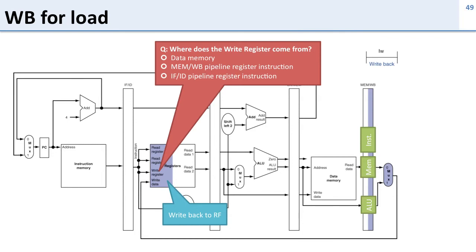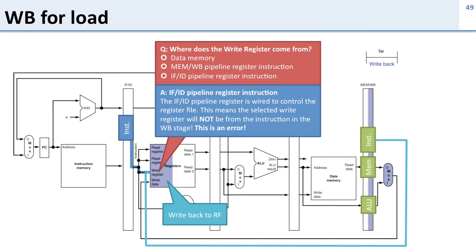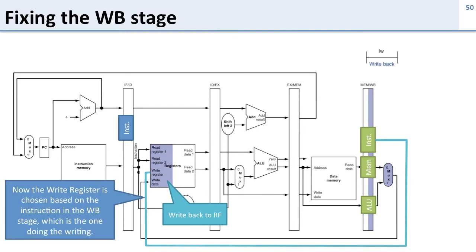Finally here's our write back stage. It writes results back into the register file either from the memory or from the ALU operation. But where does the write register come from — where are we getting the correct register ID to write into? In this example it's coming from the IF pipeline register, which is clearly wrong. We don't want that instruction; we want the instruction whose data we're writing back. The blue instruction is four instructions behind. We need to fix the wiring so the write register comes directly from the instruction in our last pipeline stage instead of the first.